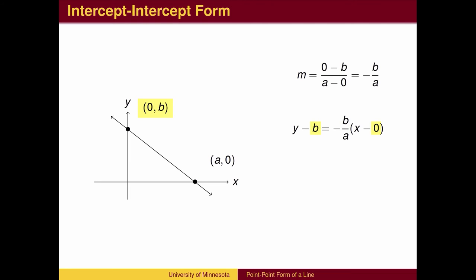Using the y-intercept, the point-slope equation of the line is y minus b equals negative b over a times x, which can also be written as y equals negative b over a times x plus b.